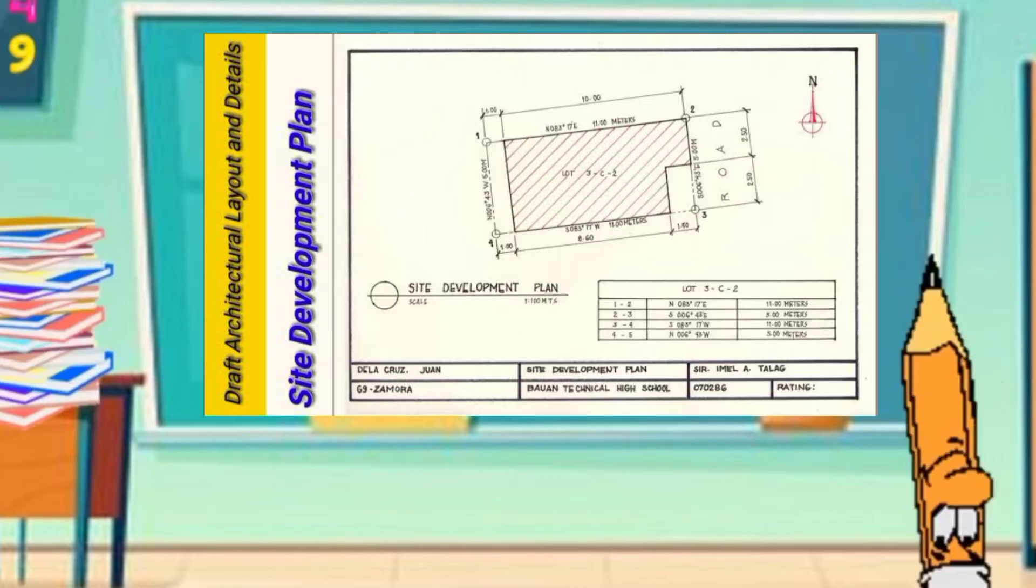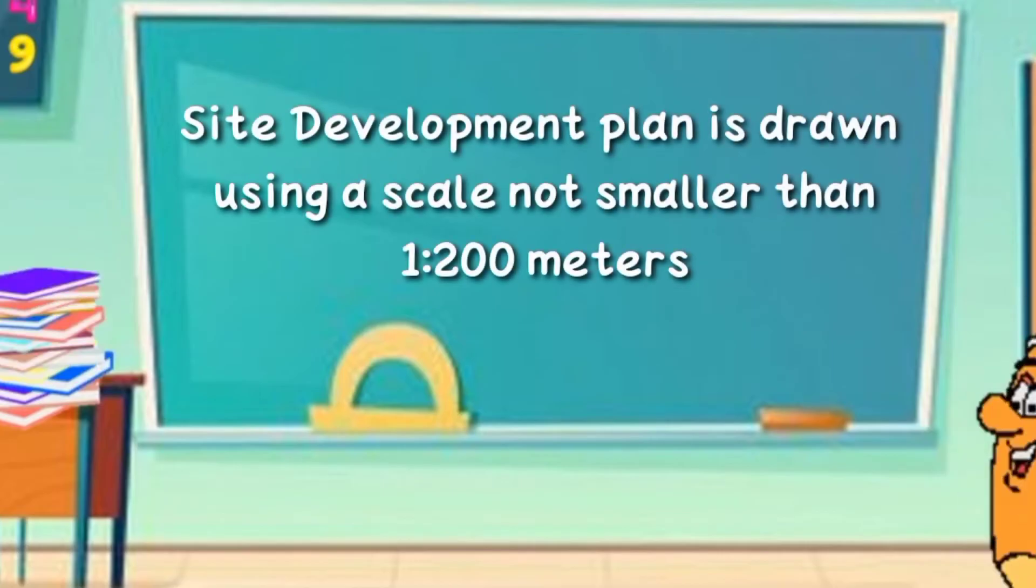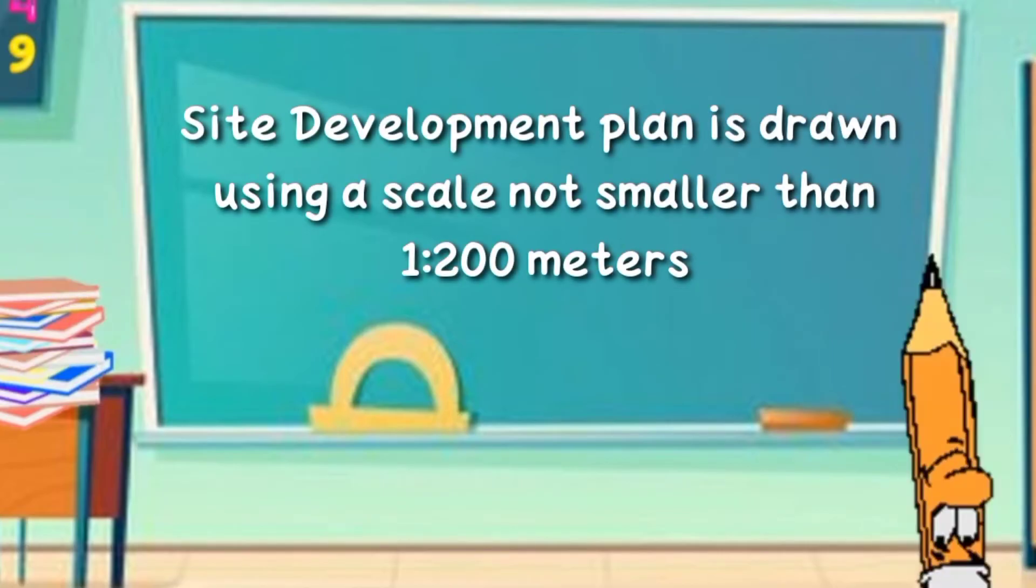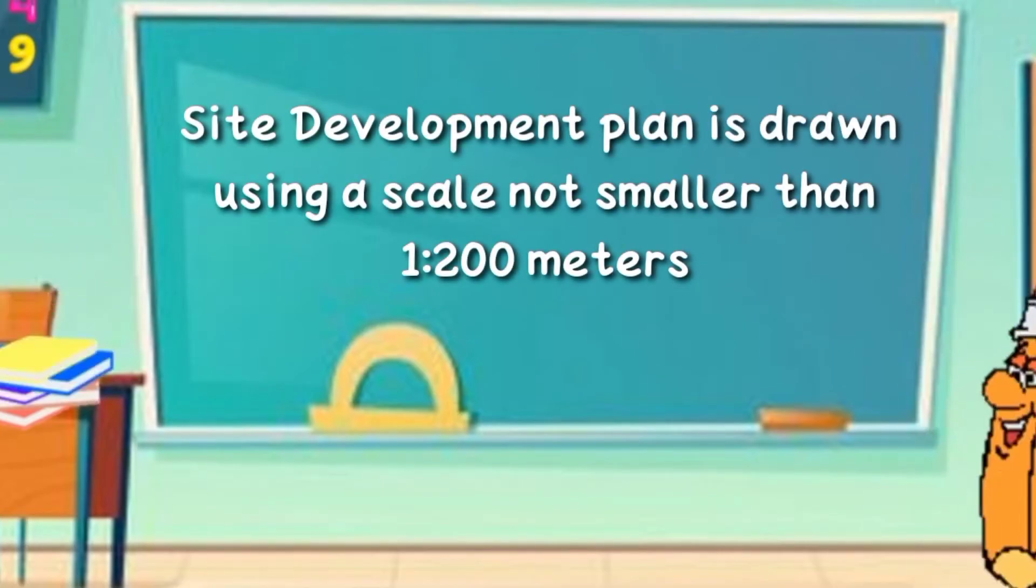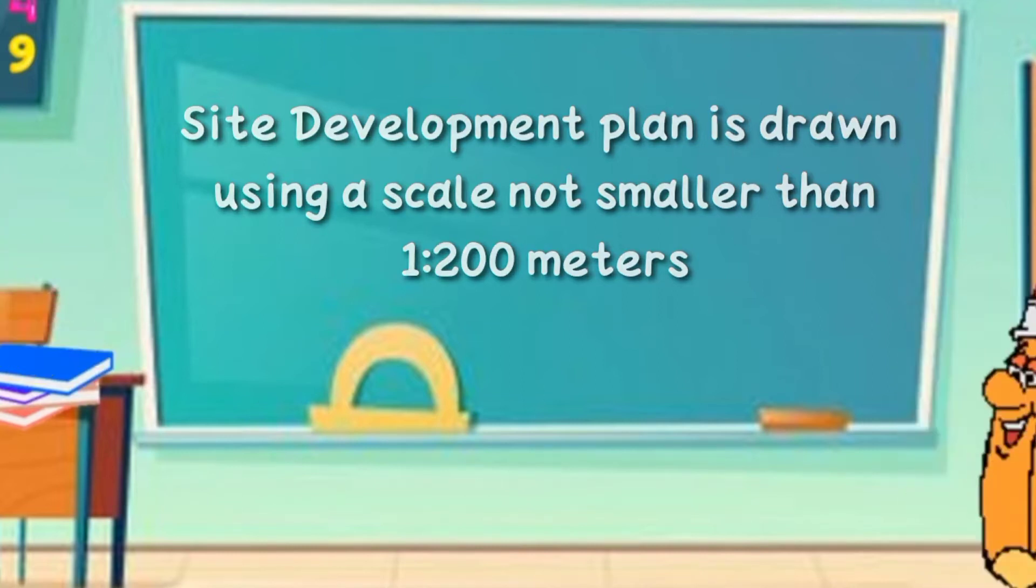and other pertinent data in relation to the site. A Site Development Plan is drawn using a scale not smaller than 1 to 200 meters so that the other features found in the plan will not be greatly affected.